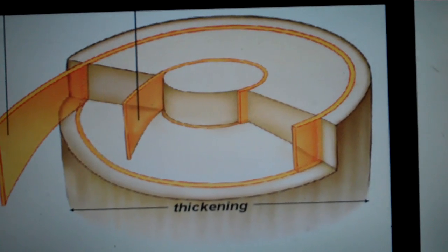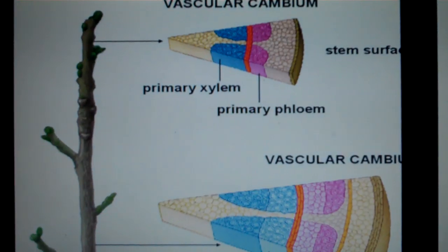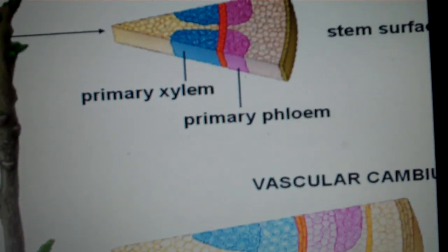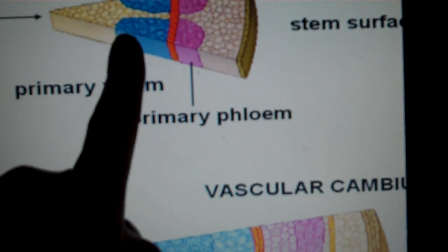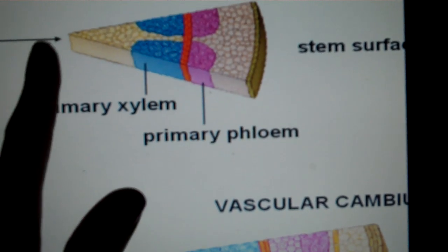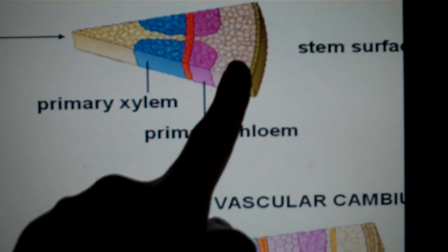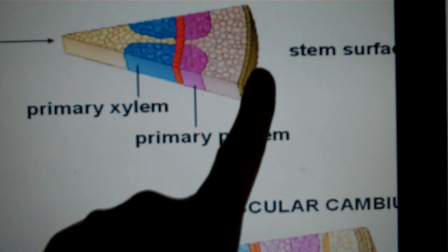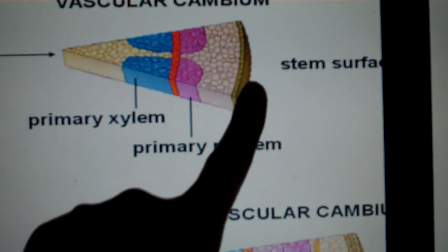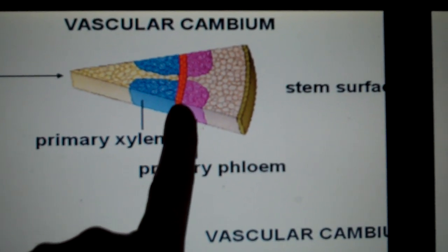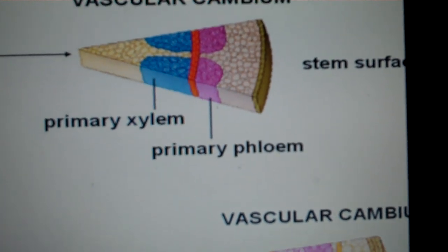For this section, we're going to focus on the vascular cambium. You find the vascular cambium in between the xylem and the phloem. Here we have the pith, then the cortex, the dermal tissue or epidermis, and the vascular cambium is this orange line here in the middle.